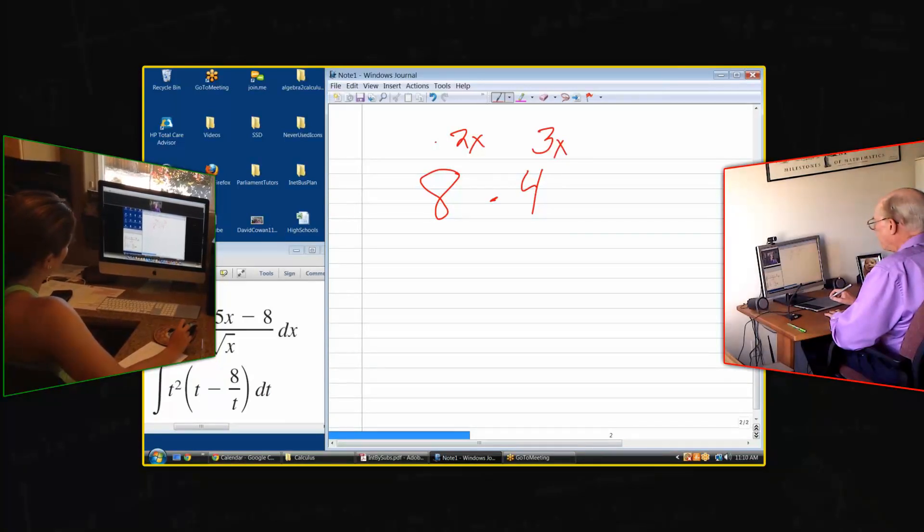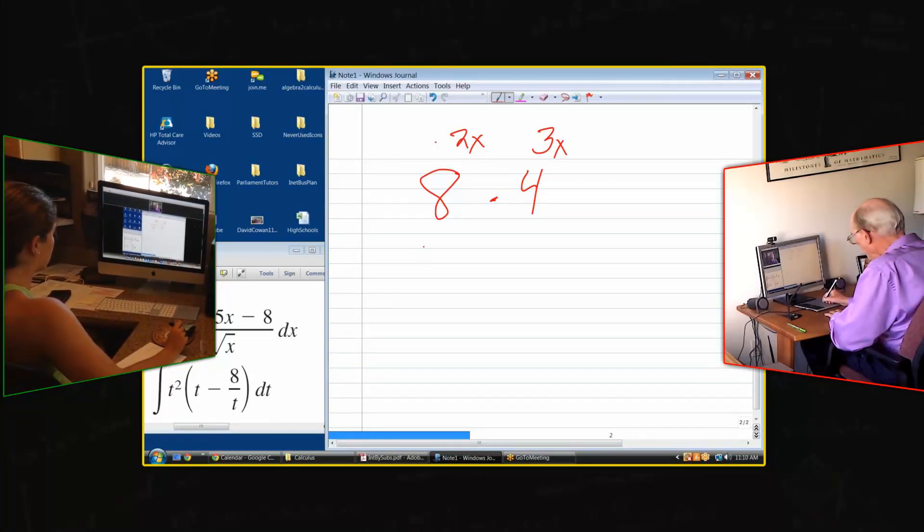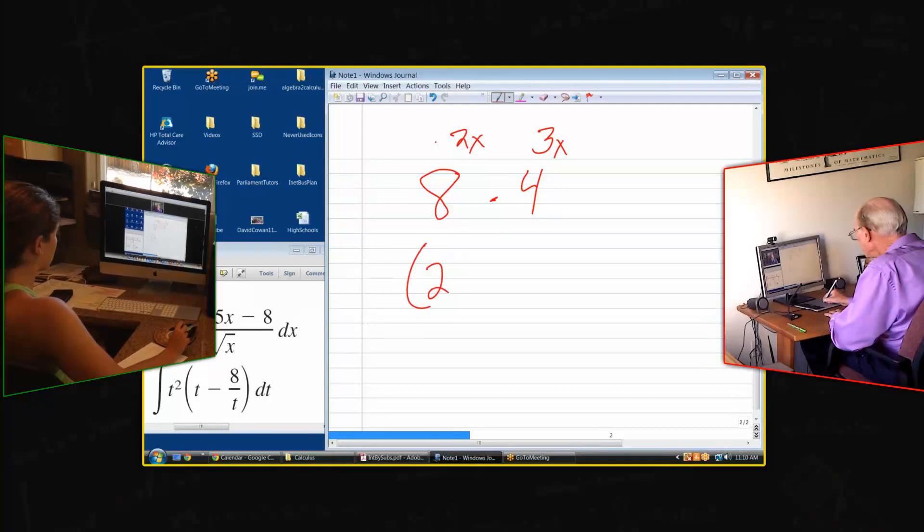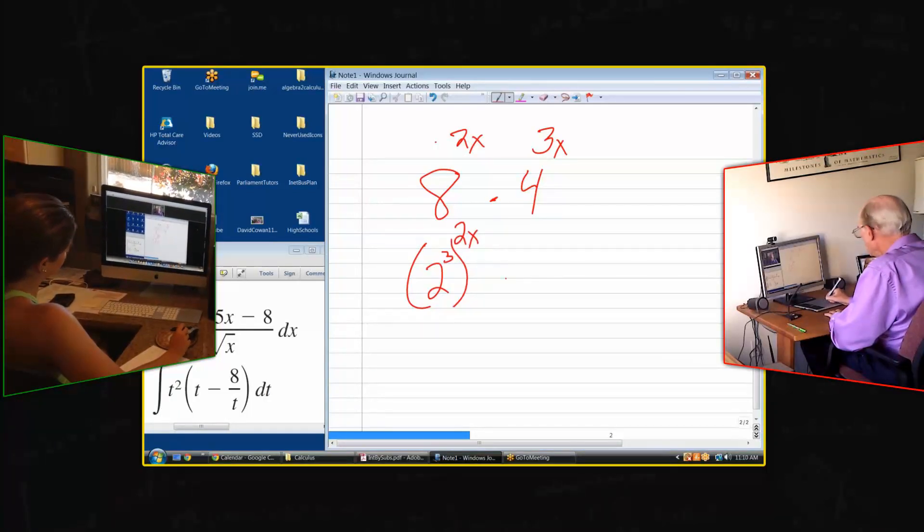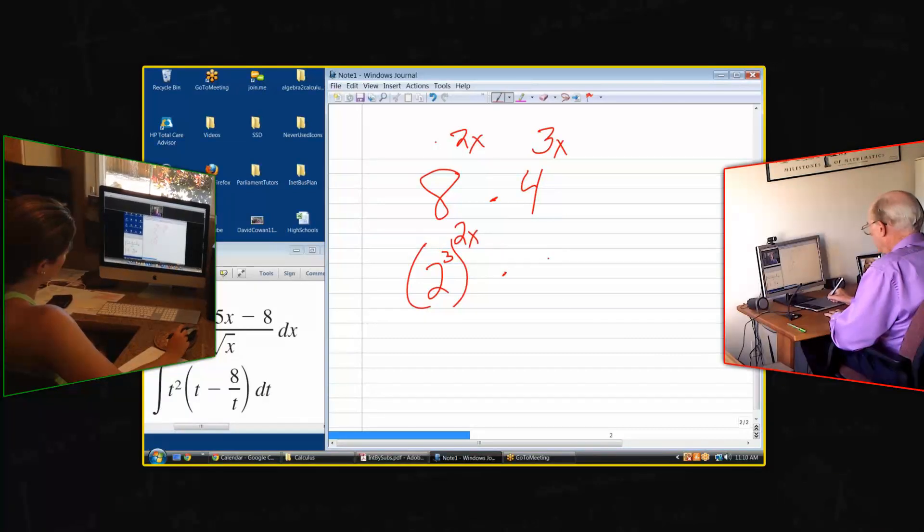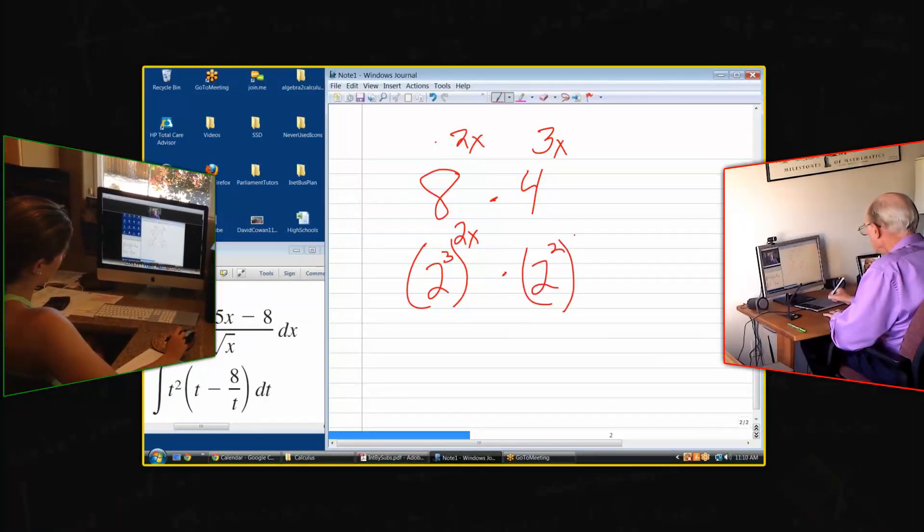We'd start by finding a common base, so it would be 2 to the third. Okay, so we're going to write 8 as 2 to the third in parentheses, 2 to the 2x times 2 squared raised to 3x. Okay, and then what?